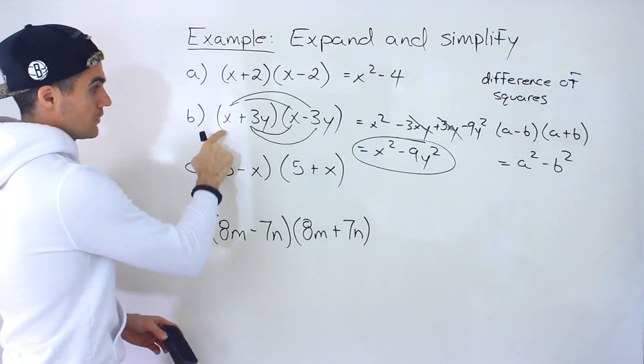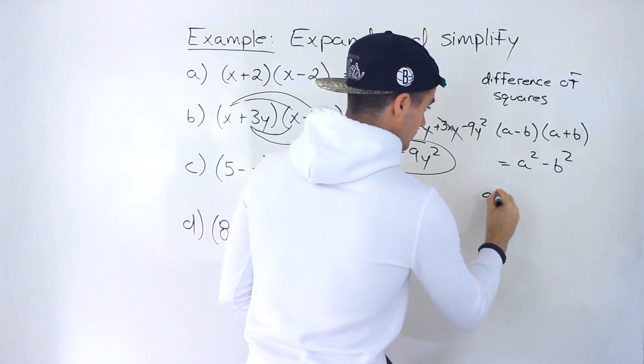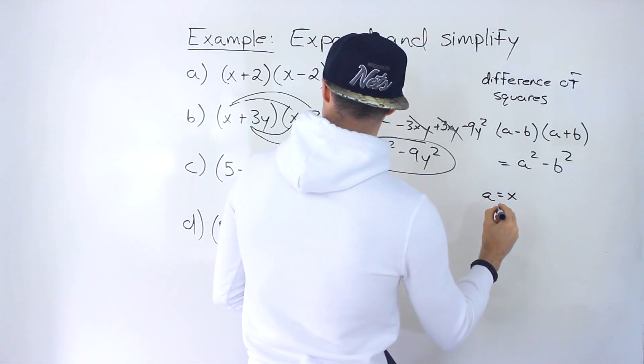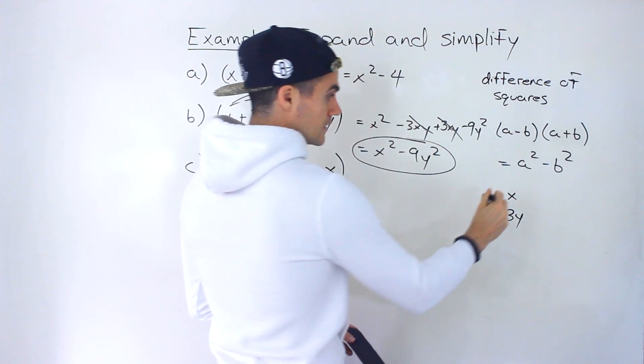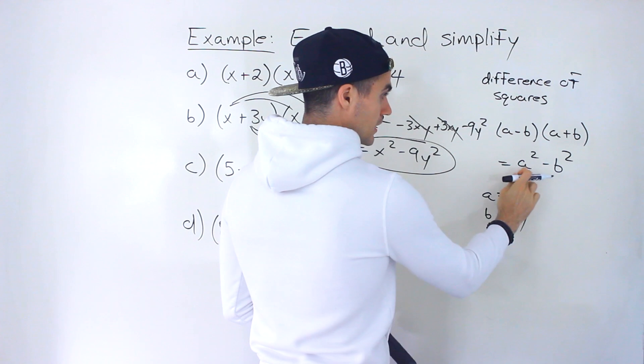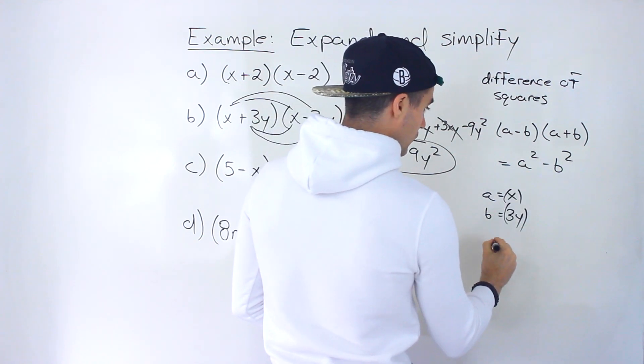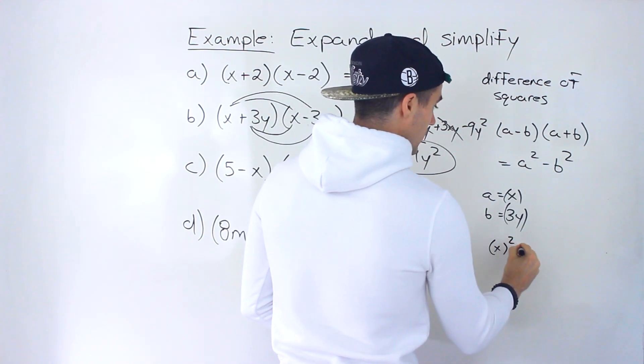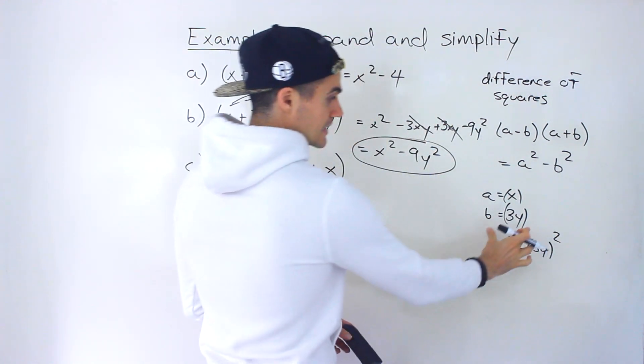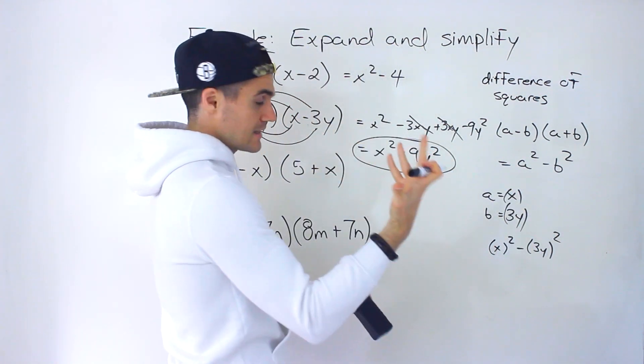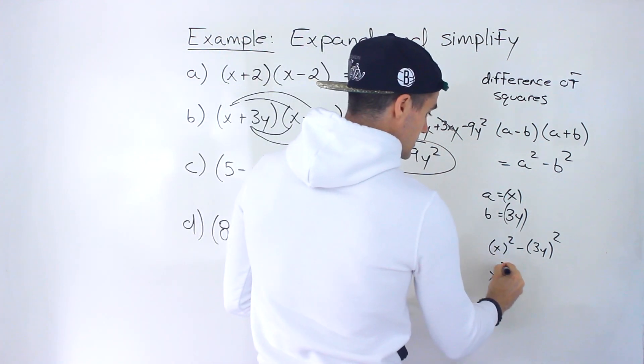If we apply the formula, notice the a value is x and then the b value is 3y. So taking these terms, plugging it in for the a and the b in the formula, you'll have x squared minus 3y squared. You got to take that entire b value and square it.